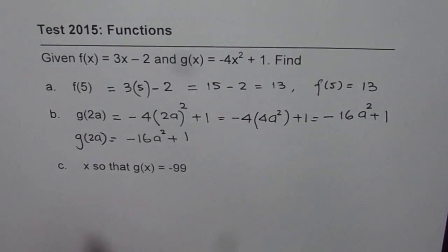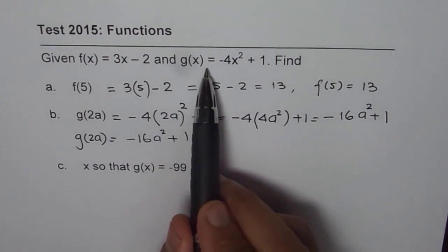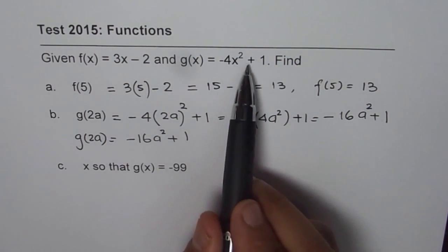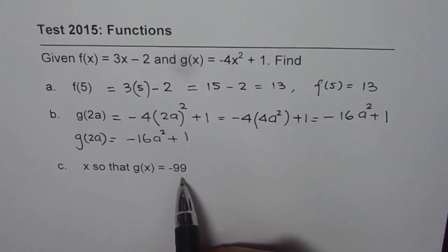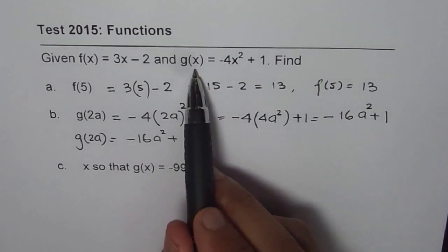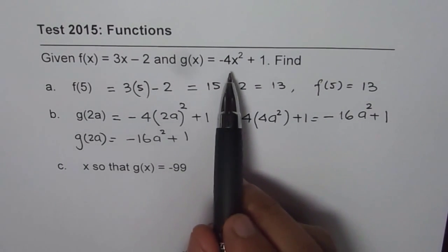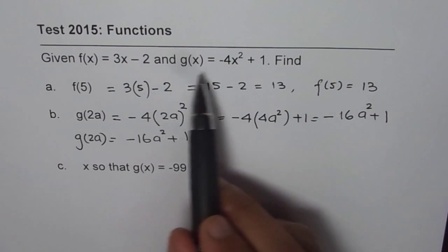Now part c is we need to find x so that g(x) is -99. So in this function g(x) = -4x² + 1, we are given the value of g(x) which is -99. We need to find the value of x which will give us that value of g(x).